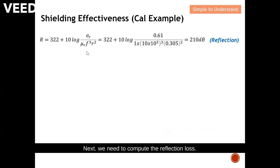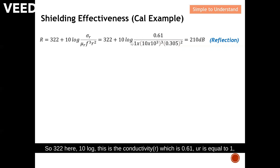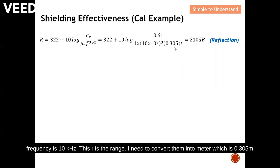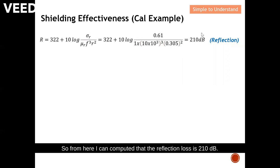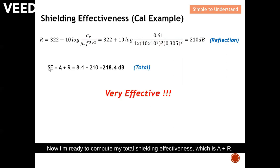Next, we compute the reflection loss. For the electric field reflection loss, we use equation 3-2: 10 log of the formula involving conductivity_r (0.61), mu_r (1), frequency (10 kilohertz), and range r (0.305 meters, converted from one foot). From here we compute that the reflection loss is 210 dB.